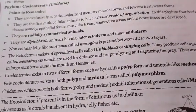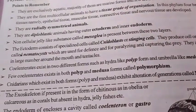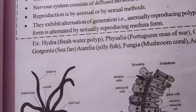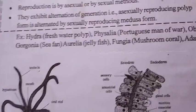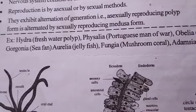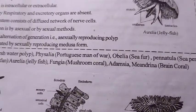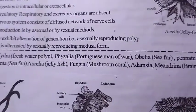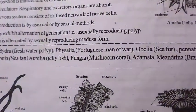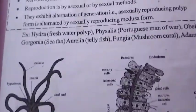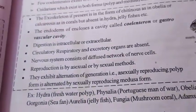You need to remember five to six characteristics — that's enough. Examples given for Phylum Cnidaria include Hydra, Physalia, Obelia, Pennatula, Aurelia, Fungia, and mushroom coral. If you remember these examples, that's enough.